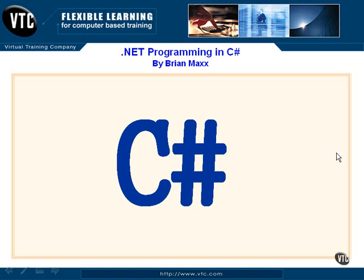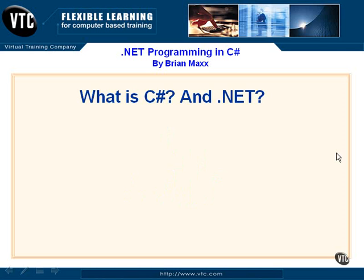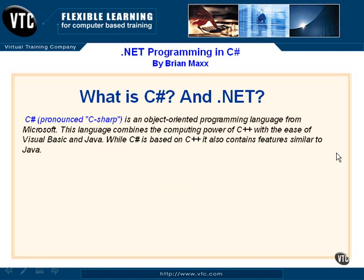Let's talk a little bit about C-Sharp. So what is C-Sharp and what is .NET, and why should we care? C-Sharp is a fantastic language. It's an object-oriented language from Microsoft, but it's being spread out to other platforms and other companies are adopting it. It's up for ECMA standards — it's going to be a standardized way of programming. This language really combines the power of C++ with the ease of working with Visual Basic and Java.